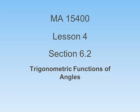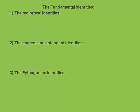Here we go with Lesson 4, Section 6.2, Trigonometric Functions of Angles. Here's a little bit of what we're going to see today. We're going to talk about the fundamental identities. They're broken into three categories: the reciprocal identities, which you already know; the tangent and cotangent identities; and the Pythagorean identities, of which there are three. So we'll knock these out one at a time.